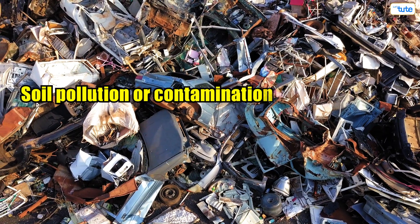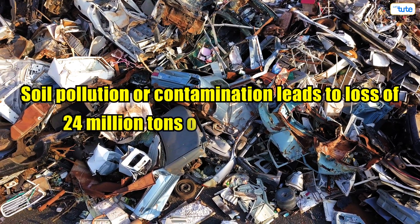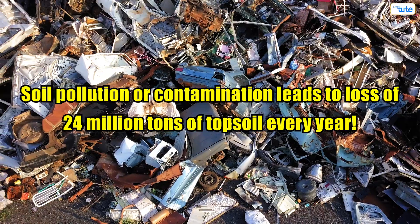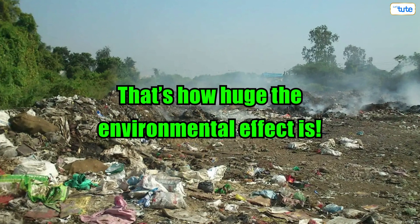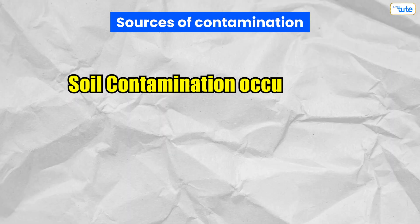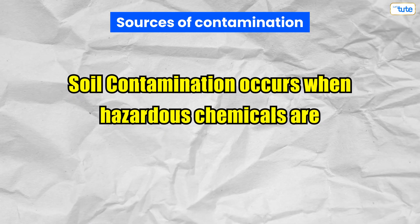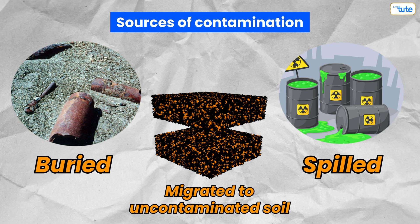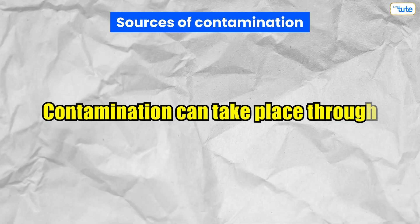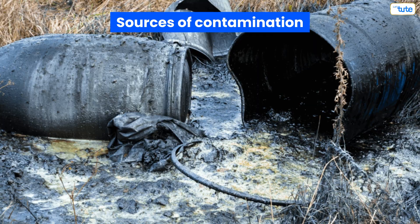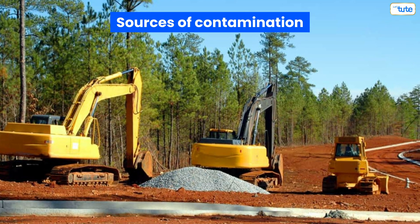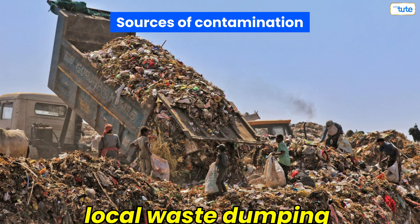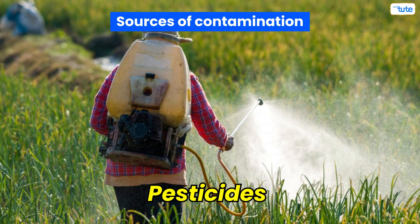Soil pollution or contamination leads to loss of 24 million tons of topsoil every year — that's how huge the environmental effect is. Soil contamination occurs when hazardous chemicals are buried, spilled, or migrated to uncontaminated soil. Contamination can take place through industrial waste disposal, improper disposal of hazardous chemicals, land development, local waste dumping, and excessive use of fertilizers and pesticides.